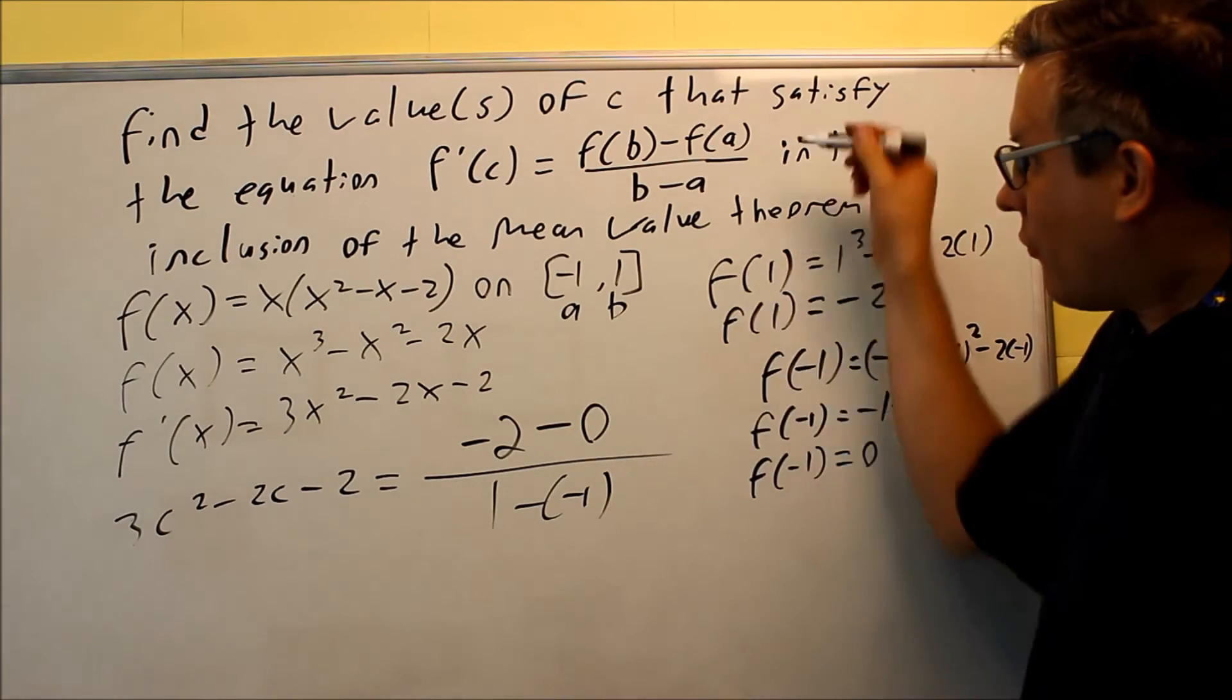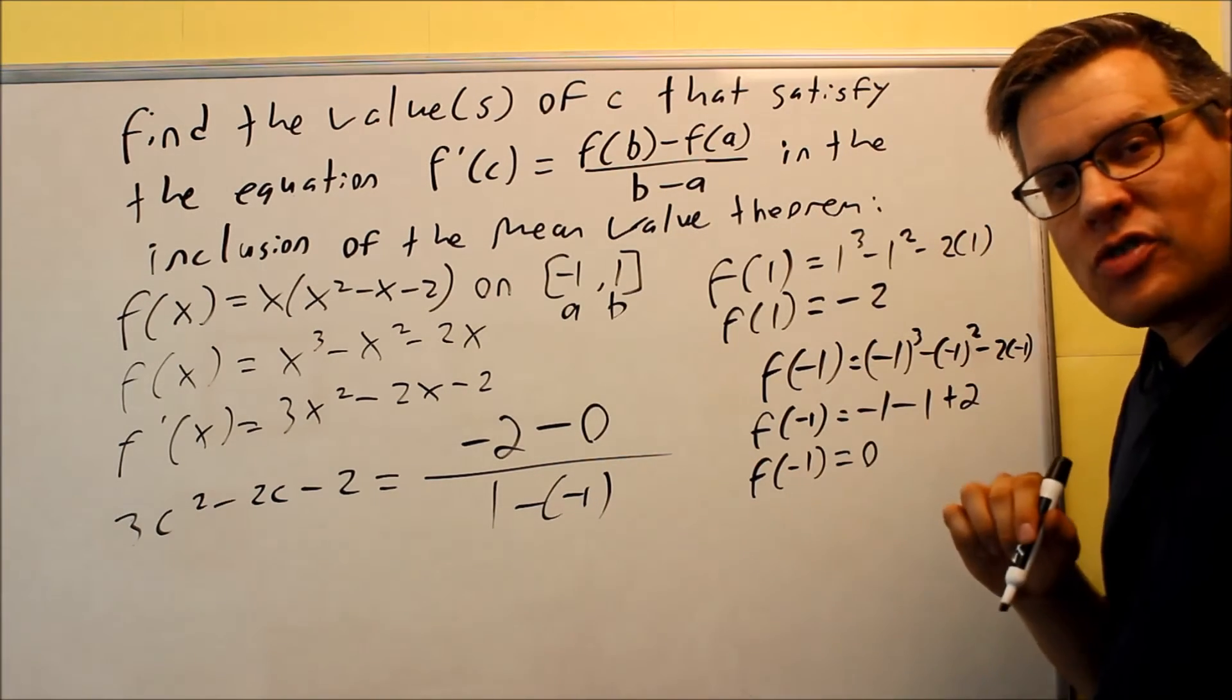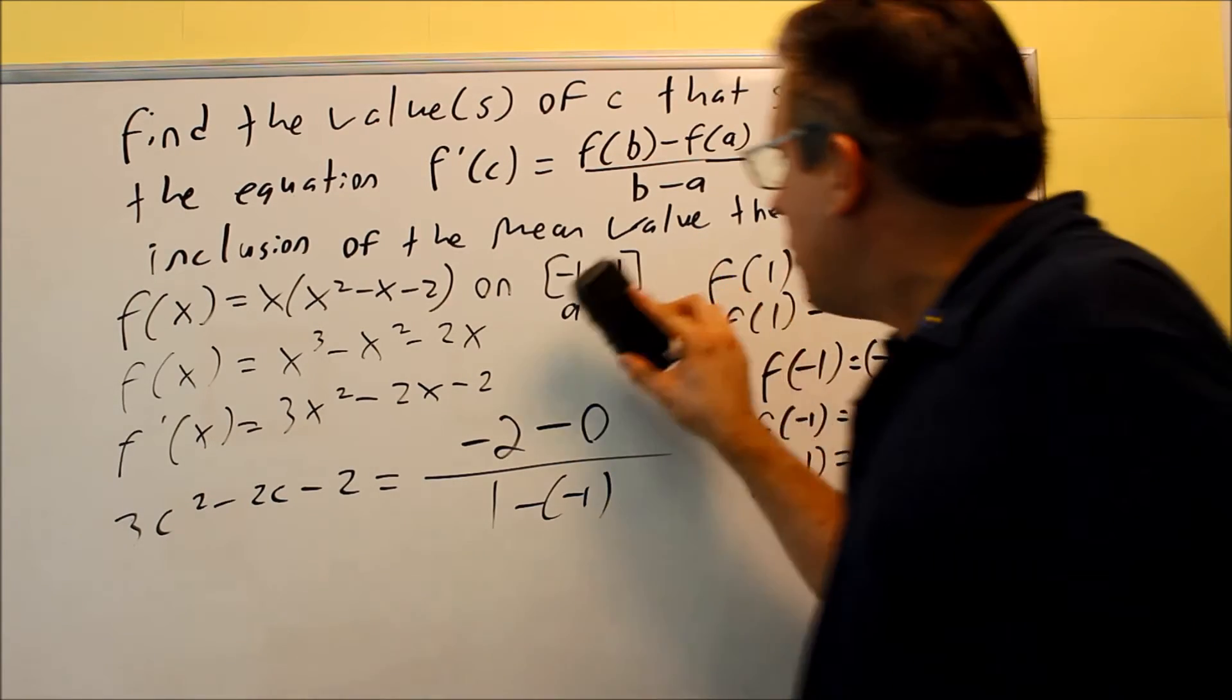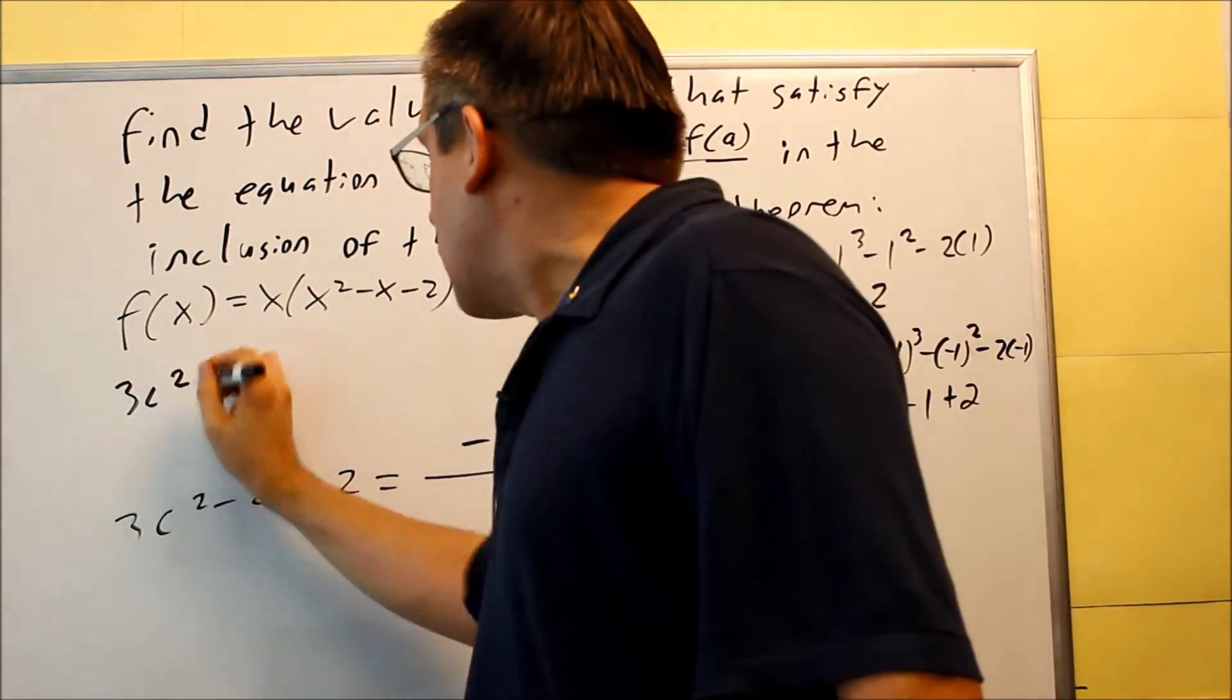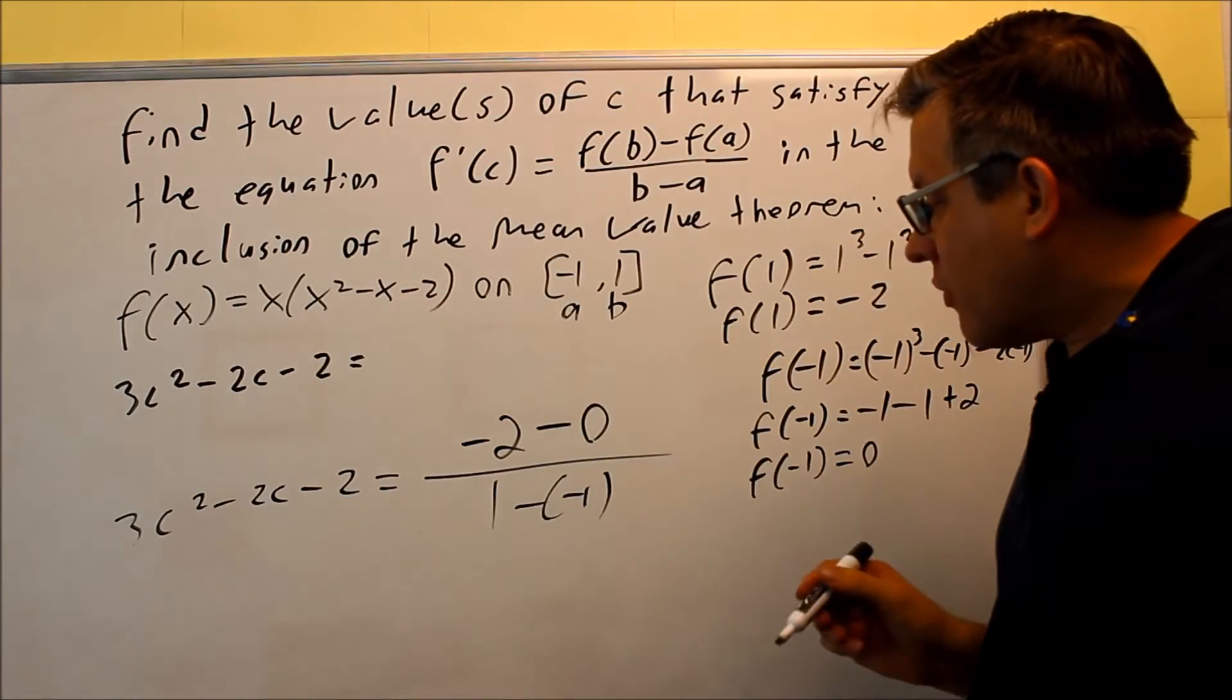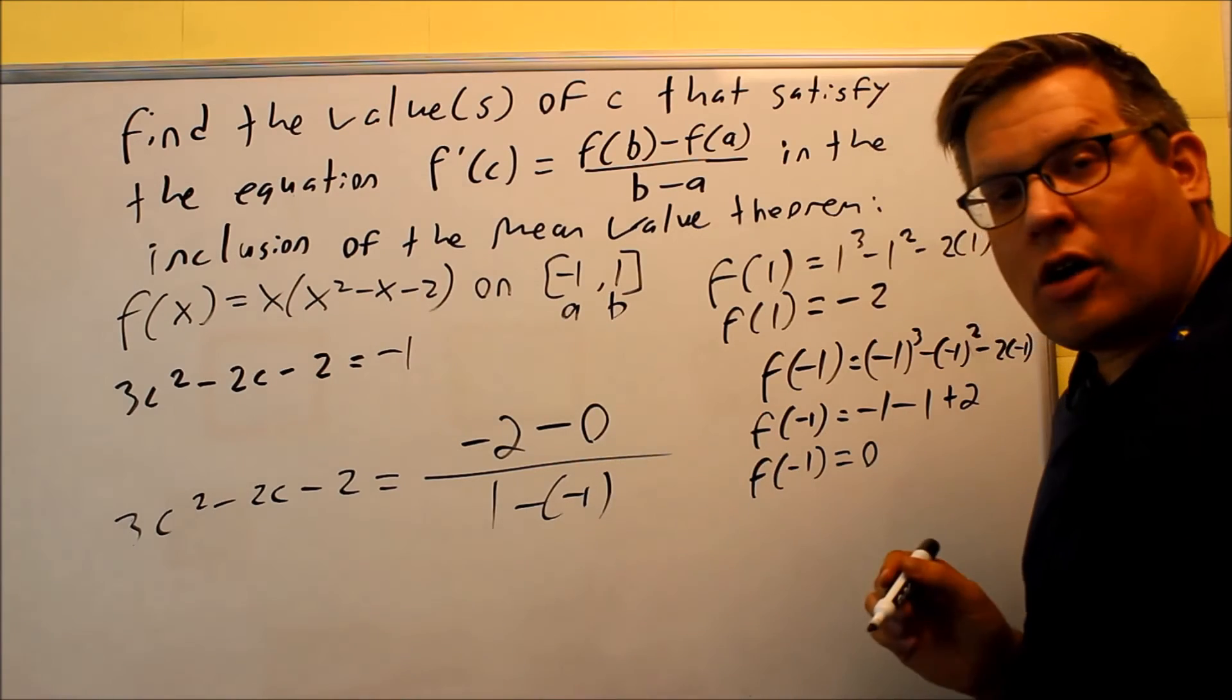Once I have this complete and I filled in all the values, I now want to simplify it and then solve, and I'll get my value for C. The values for C that I get should actually end up being between negative 1 and 1. Okay, so let's check that out now. I'm going to go ahead and erase this part. Okay, we get 3C squared minus 2C minus 2. If I simplify this, that's negative 2 over 2. That means I'll get a negative 1 on the right-hand side, again, by simplifying all this here.